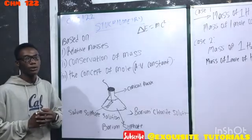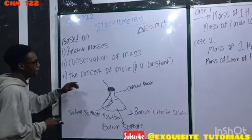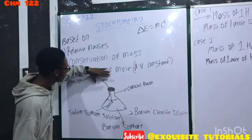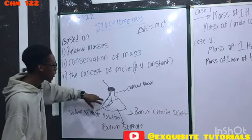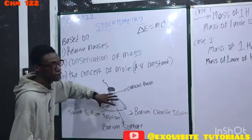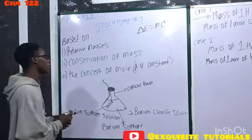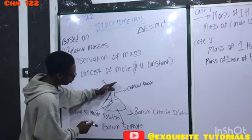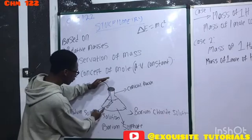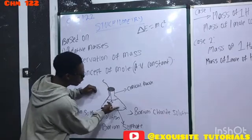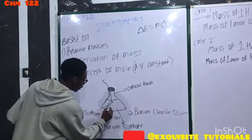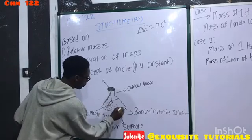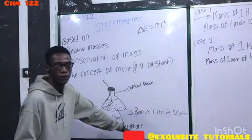When you measure the mass of this whole setup with its solution and everything, it has a specific mass. After the sodium sulfate solution is poured into the barium chloride solution, crystals form—barium sulfate.